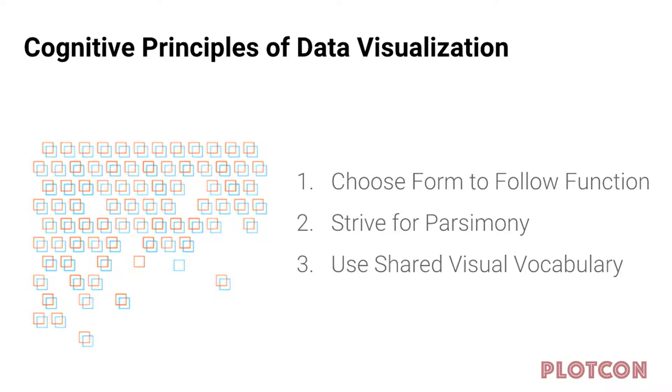What are some cognitive principles of data visualization? There are many more than these, but a few worth highlighting. The first is choose form to follow function — an architectural principle as well as a visualization one. The second is strive for parsimony. And the third is use or leverage a shared visual vocabulary. I'll give some examples of each.